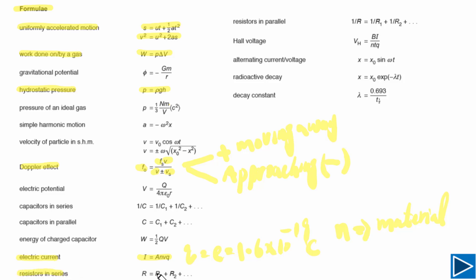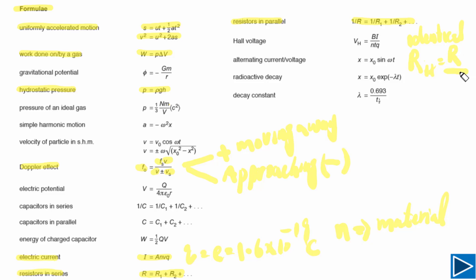For resistors in series, simply add the resistance of all resistors. For resistors in parallel, use the reciprocal formula to calculate total resistance. A useful trick: if all resistors are identical and connected in parallel, the total resistance equals the resistance of one resistor divided by the number of resistors. Remember the rest of the formulae for your exam.